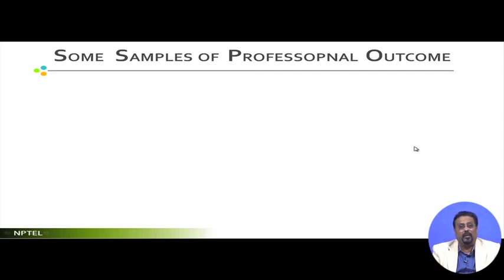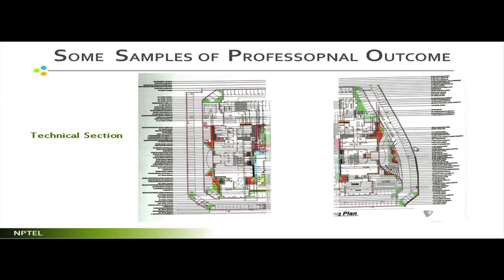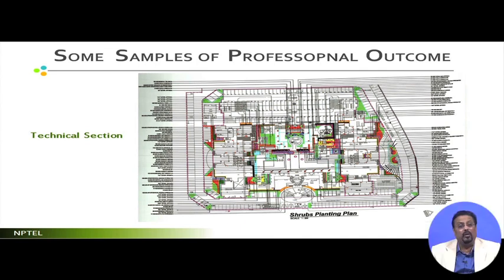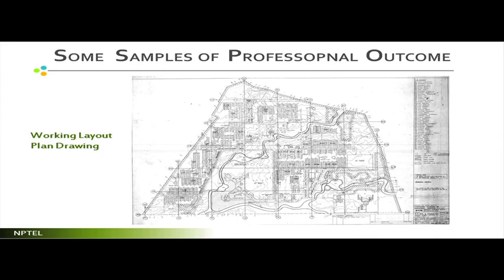This is a technical section in which every element is annotated, showing building elements and how trees will be planted, how planter boxes will be arranged. Now look at this next technical drawing — it looks very cluttered and clumsy, but these annotations are very meaningful and useful. Do not be bothered by the clutter, because each element must be labeled so it can be visualized and communicated clearly.